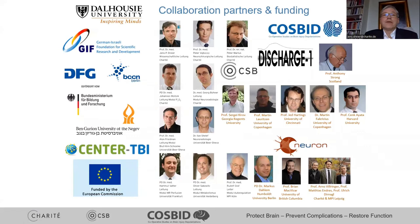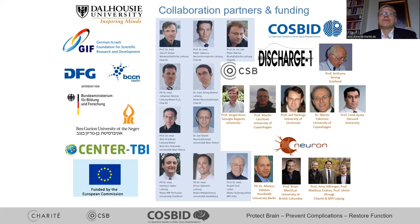The DISCHARGE-1 study was performed by many people. Most importantly: Johannes Woitzik, the main neurosurgeon and senior author; Peter Martus, the trial statistician; Alon Friedman, involved in neuroimaging analysis, as were Gaborone and Ilan Shelef; Peter Vajkoczy, Hartmut Vatter, and Oliver Sakowitz were important neurosurgeons; and Rudolf Graf was the PI in Cologne. Thank you very much for your attention.